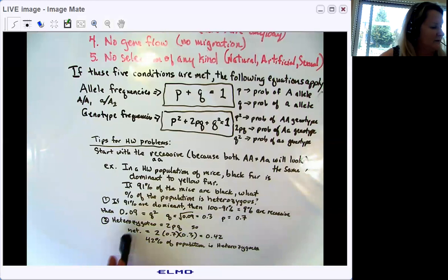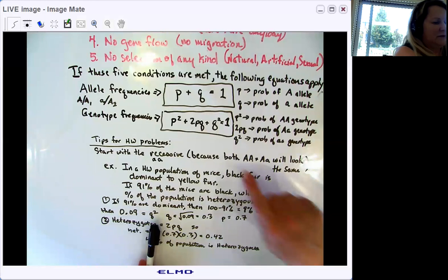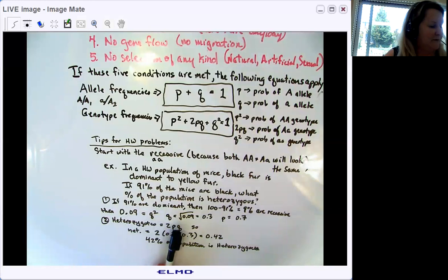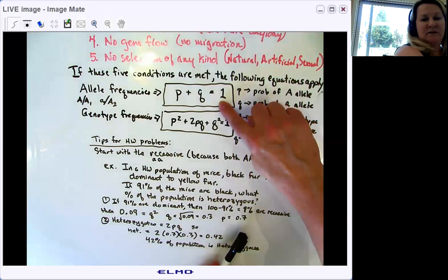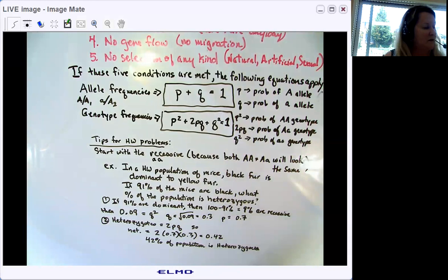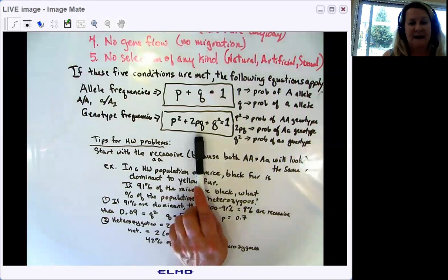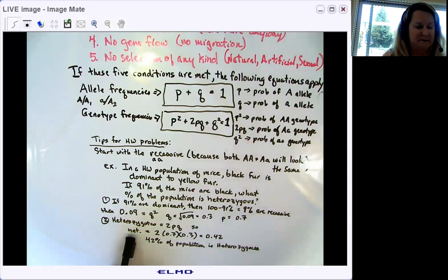So let's turn that into a percentage. 9% is 0.09. Set that equal to Q squared, which tells us how many are homozygous recessive. Take the square root of both sides, and you get Q equals 0.3. If Q, the recessive allele, has a frequency of 0.3, then P has to be 0.7 because P plus Q has to equal 1. Now the question asked us to find what percentage of the population is heterozygous. Heterozygous is 2PQ. So the frequency of heterozygous would be 2 times 0.7, which is P, times 0.3, which is Q, which works out to 42% of the population is heterozygous.